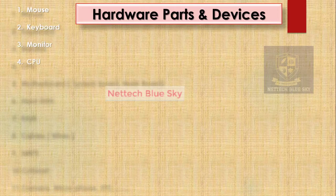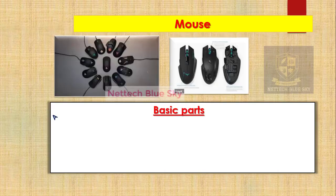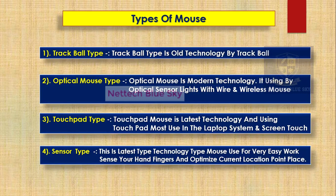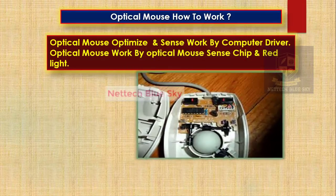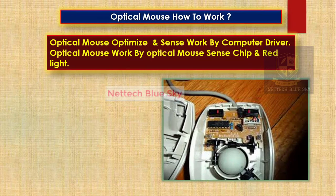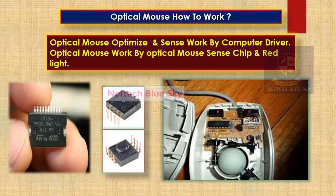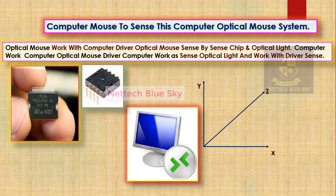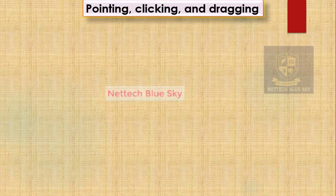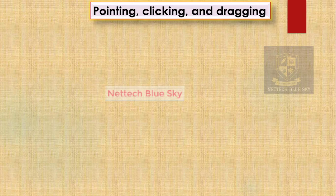Watch my previous video on how many types of hardware parts there are, mouse devices, how many types of mouse — trackable type mouse, optical mouse, touchpad type mouse, sensor type mouse — and holding, moving, clicking, and double clicking. How optical mouse works I already covered in my previous video. Now I'm starting something new: the optical mouse pointing, clicking, and dragging system.